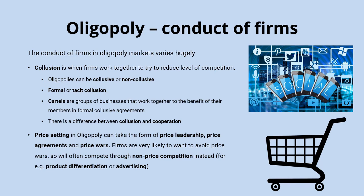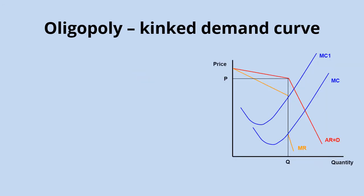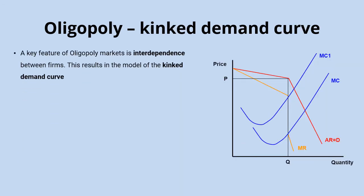Instead of undercutting rivals on price, firms might improve their product, offer better customer service, or design adverts to attract more customers. A key feature of oligopoly is interdependence — if one firm changes its behaviour, it's likely to have a very big impact on the other firms operating in that market. This leads to the model of the kinked demand curve.